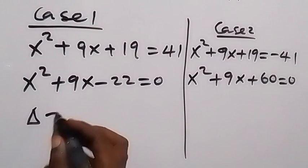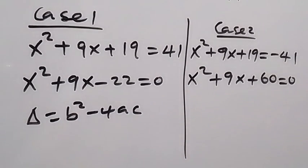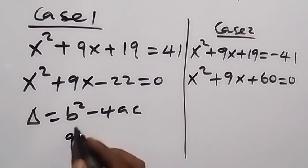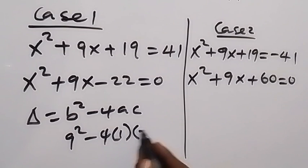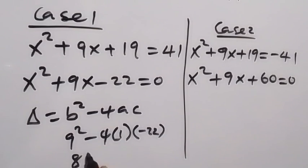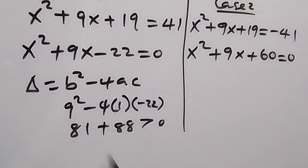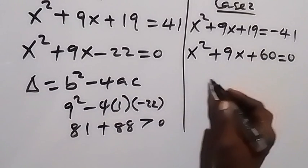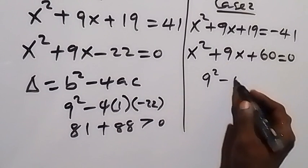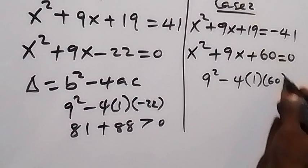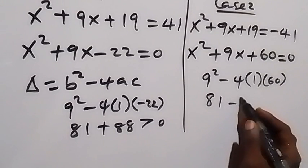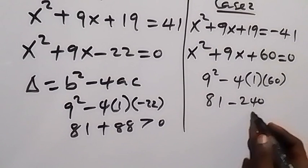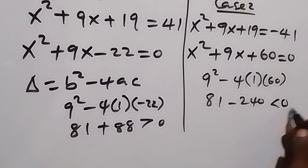Using the discriminant b²−4ac to check for solutions: For Case 1, b=9, a=1, c=−22, giving 9²−4(1)(−22) = 81+88 > 0, so there is a solution. For Case 2, b=9, a=1, c=60, giving 9²−4(1)(60) = 81−240 < 0, so there is no real solution for Case 2.